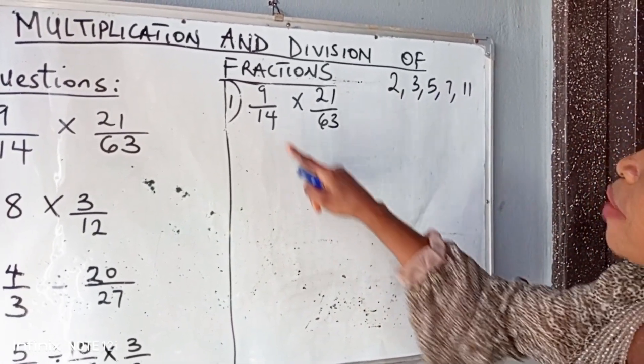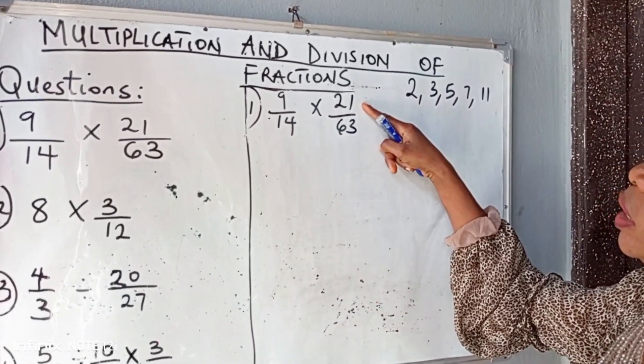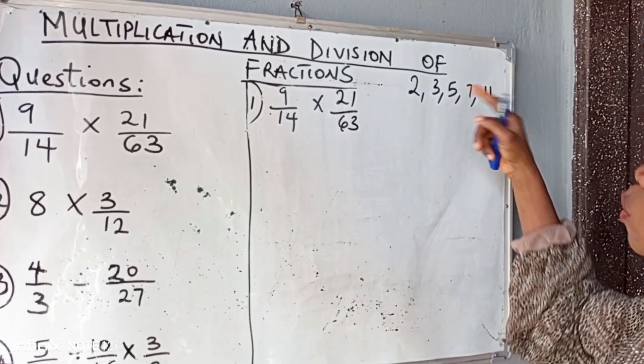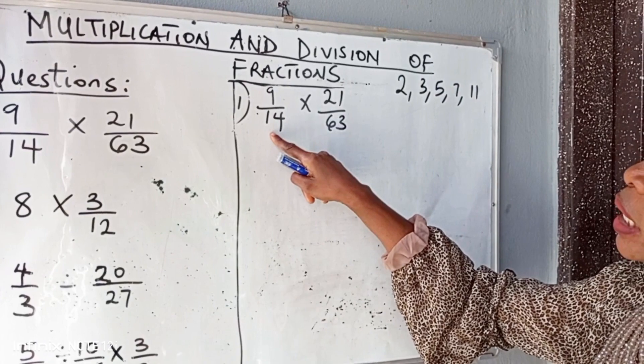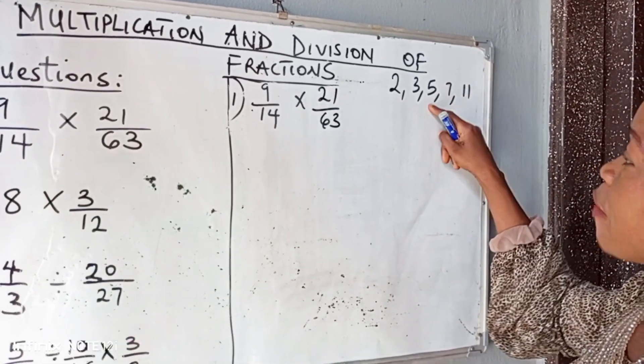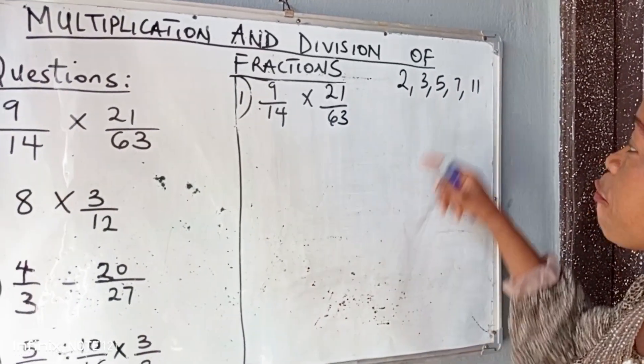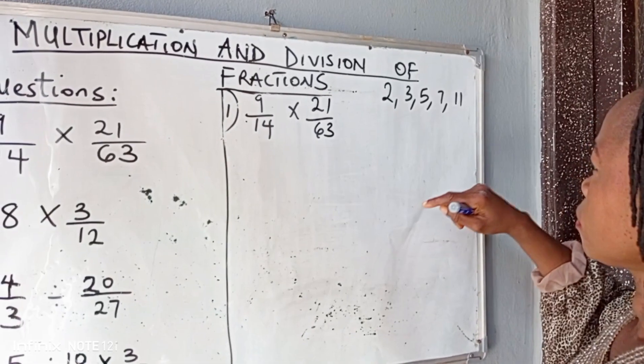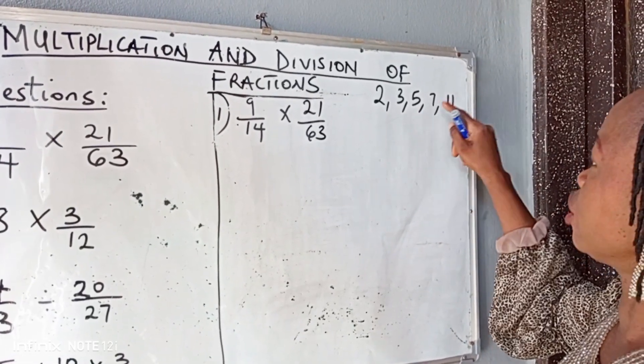So let's check. Can 2 divide 14 and 21 successfully? 2 can divide 14 but cannot go into 21. So we drop 2. We check 3. Can 3 divide 14? No, 3 can only go into 15. We drop 3. So let's check 5. Can 5 go into 14? No. 5 can only divide numbers that end with 5 and 0.